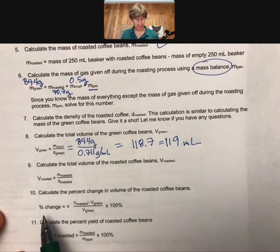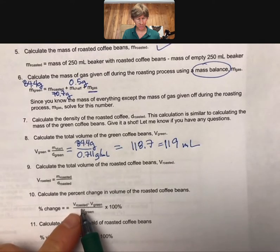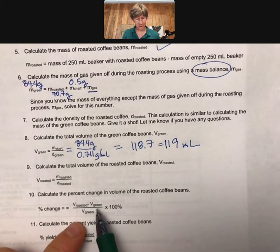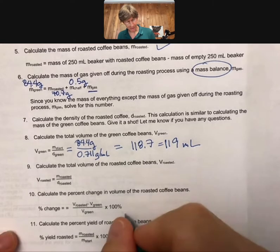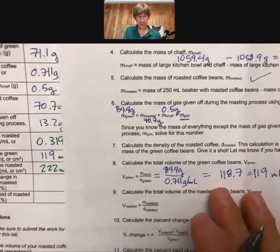That's going to be percent change. I think there should just be one equal sign there, but volume of the roasted beans minus volume of the green beans over volume green. We have these numbers. Let's see if I can keep them on page here.